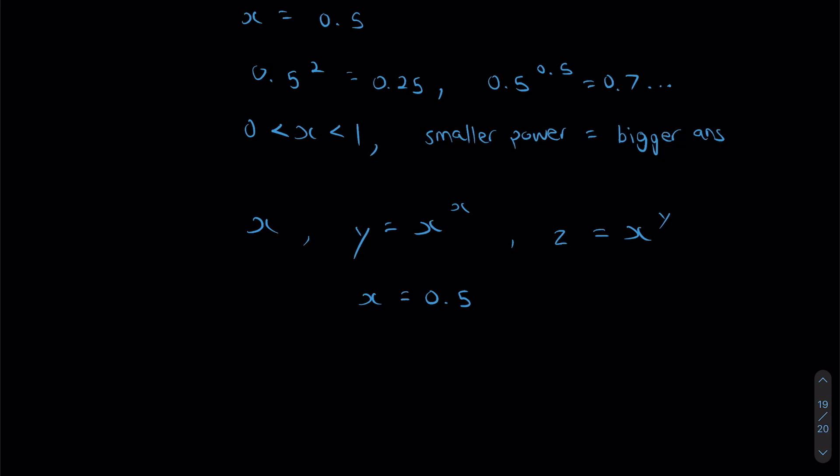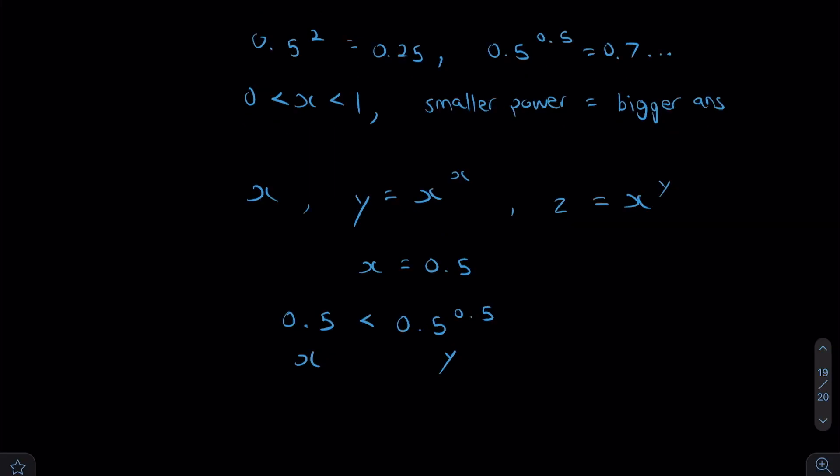But you realize that regardless of what number x is, this example is going to hold true. So 0.5 is going to be smaller than 0.5 to the power of 0.5, right? As we saw earlier, this right here is x, this right here is y. And we also worked out that 0.5 to the power of 0.5 is equal to 0.7 something. So let's just call it 0.7.